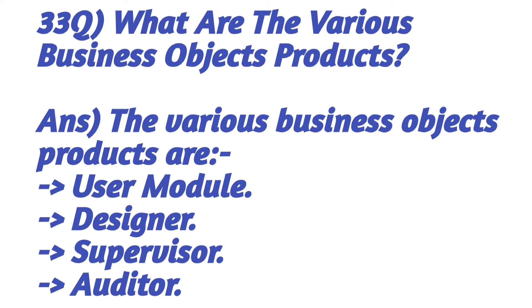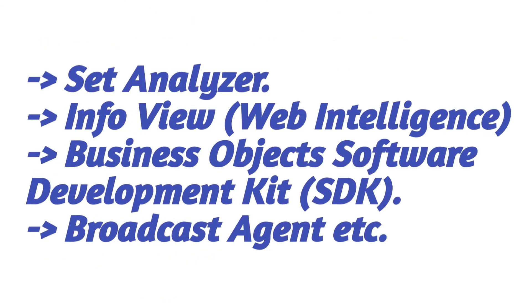What are the various Business Objects products? The various Business Objects products are: user module, Designer, Supervisor, Auditor, Set Analyzer, InfoView or Web Intelligence, Business Objects Software Development Kit (SDK), and Broadcast Agent.